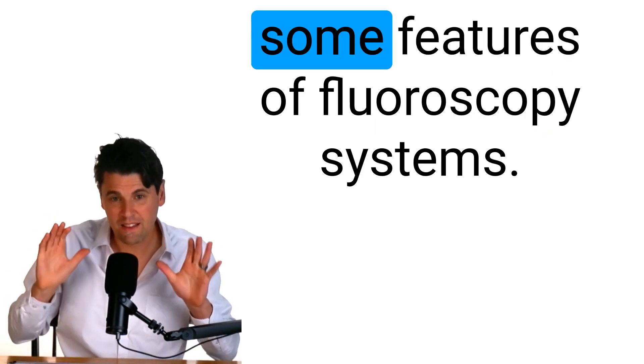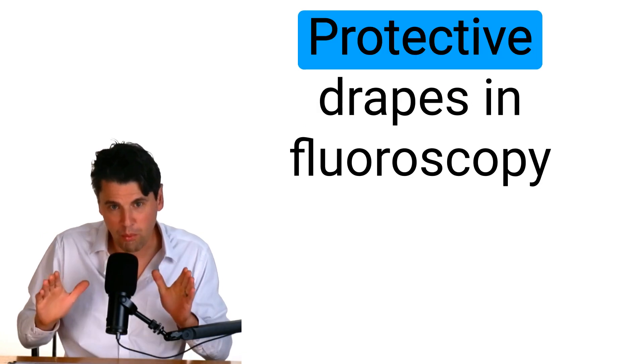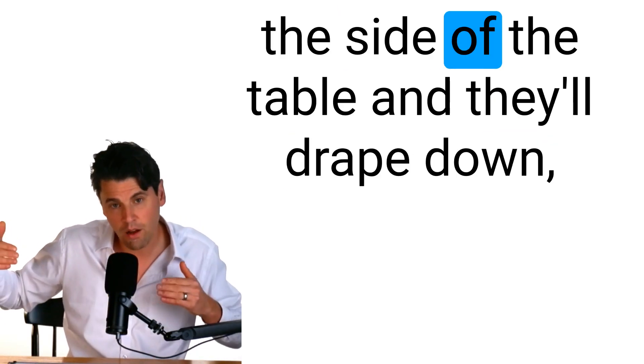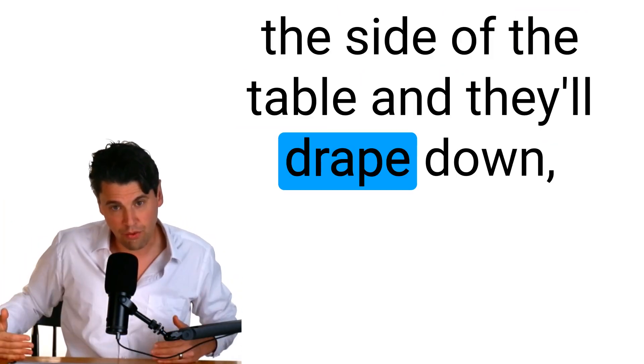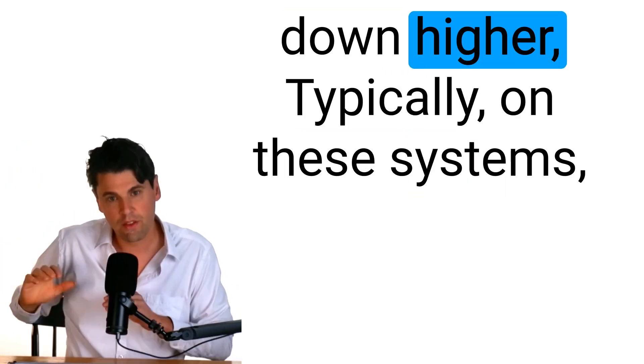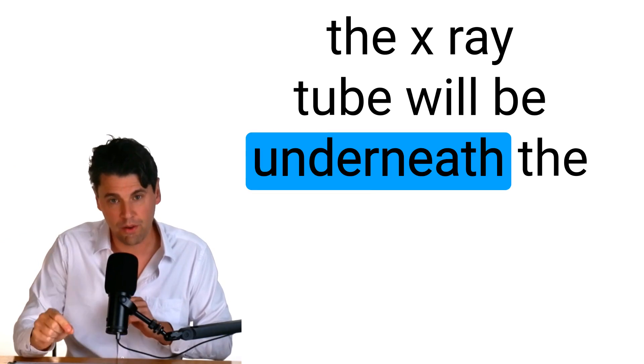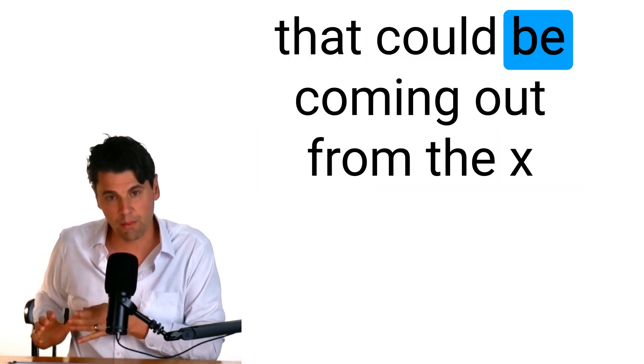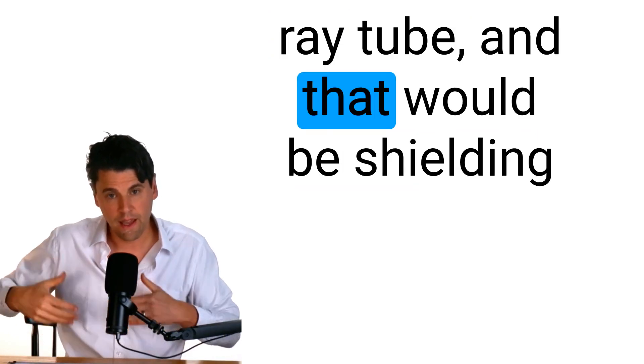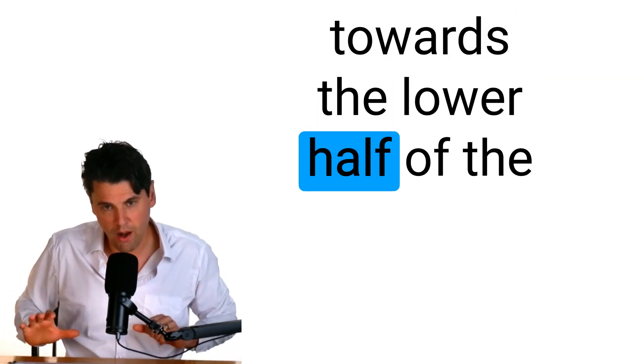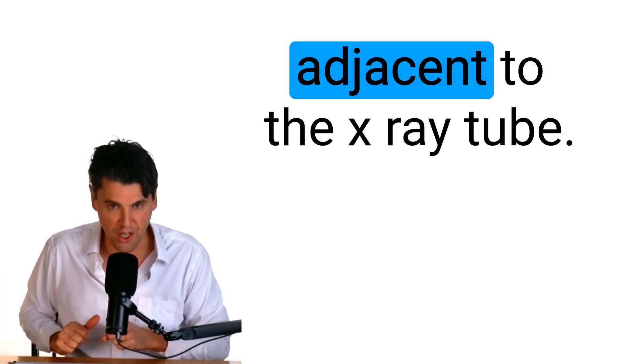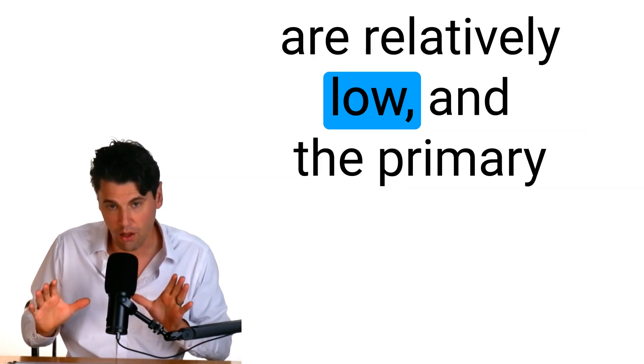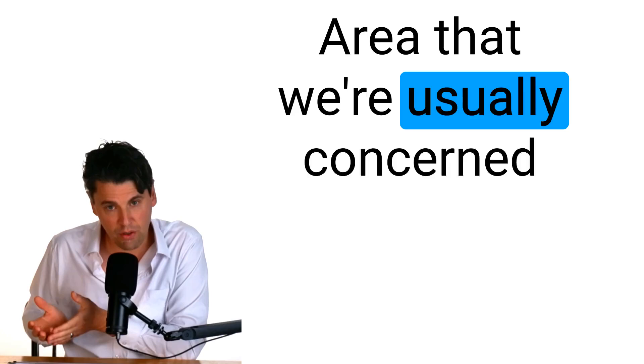Next up in this special categories is some features of fluoroscopy systems. Protective drapes in fluoroscopy systems actually are typically on the side of the table and they'll drape down. Sometimes they can even drape down higher. Typically on these systems the x-ray tube will be underneath the table. These drapes will be actually helping to shield potential stray radiation that could be coming out from the x-ray tube and that would be shielding towards the lower half of the person that's standing right adjacent to the x-ray tube.